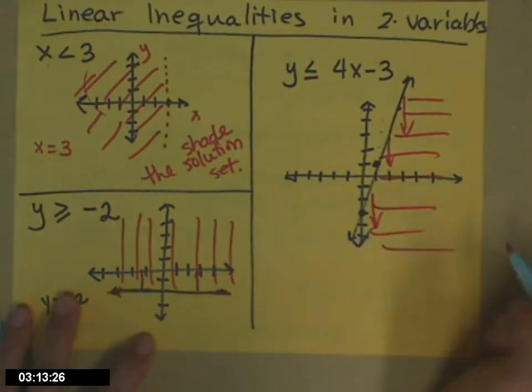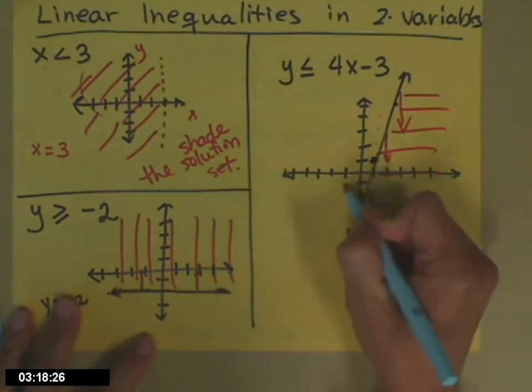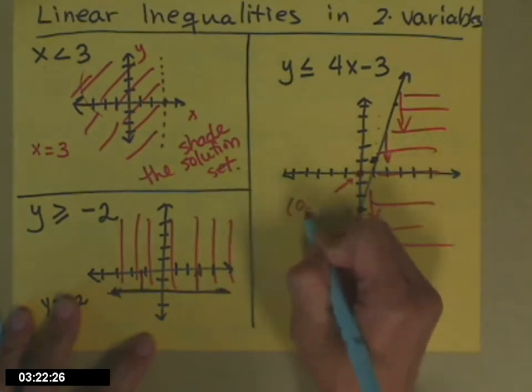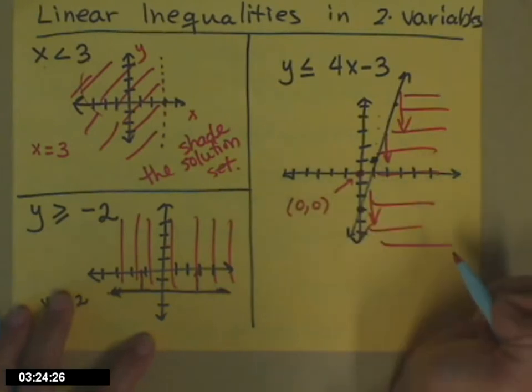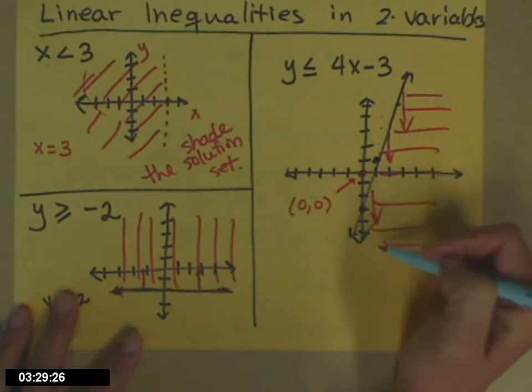Another way that you can do it is you can choose a point that you know which side of the line it falls on. For instance, in this one, the origin I know for sure is to the left of that line or technically above the line that I've drawn.